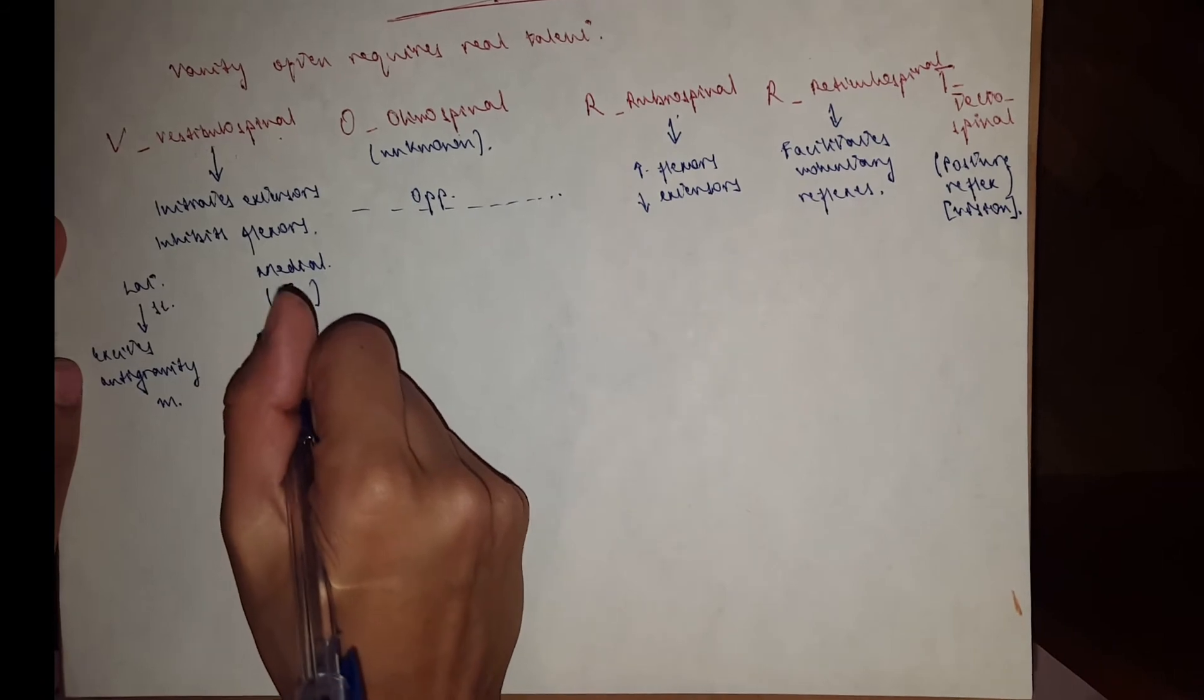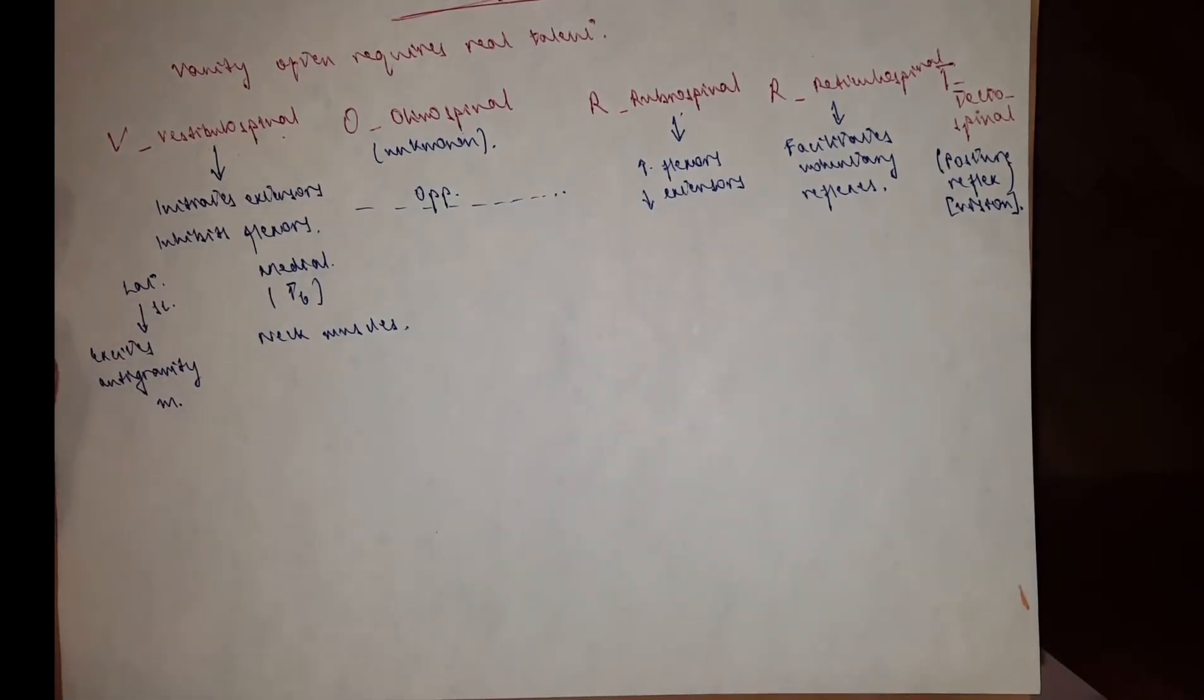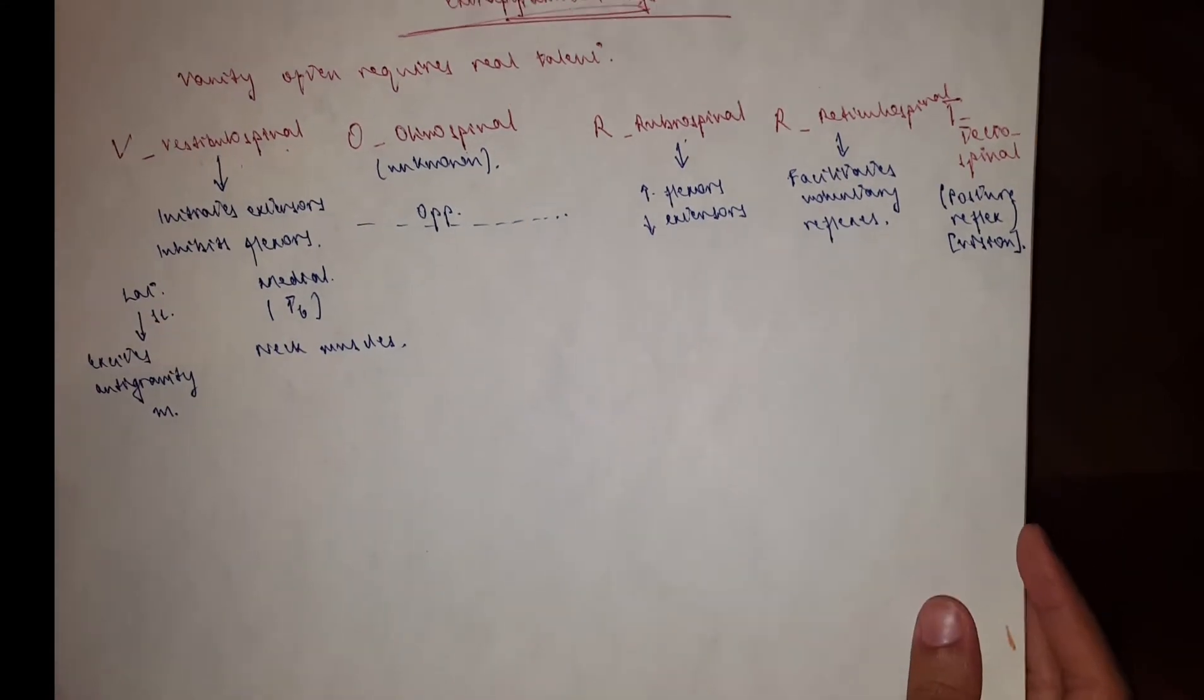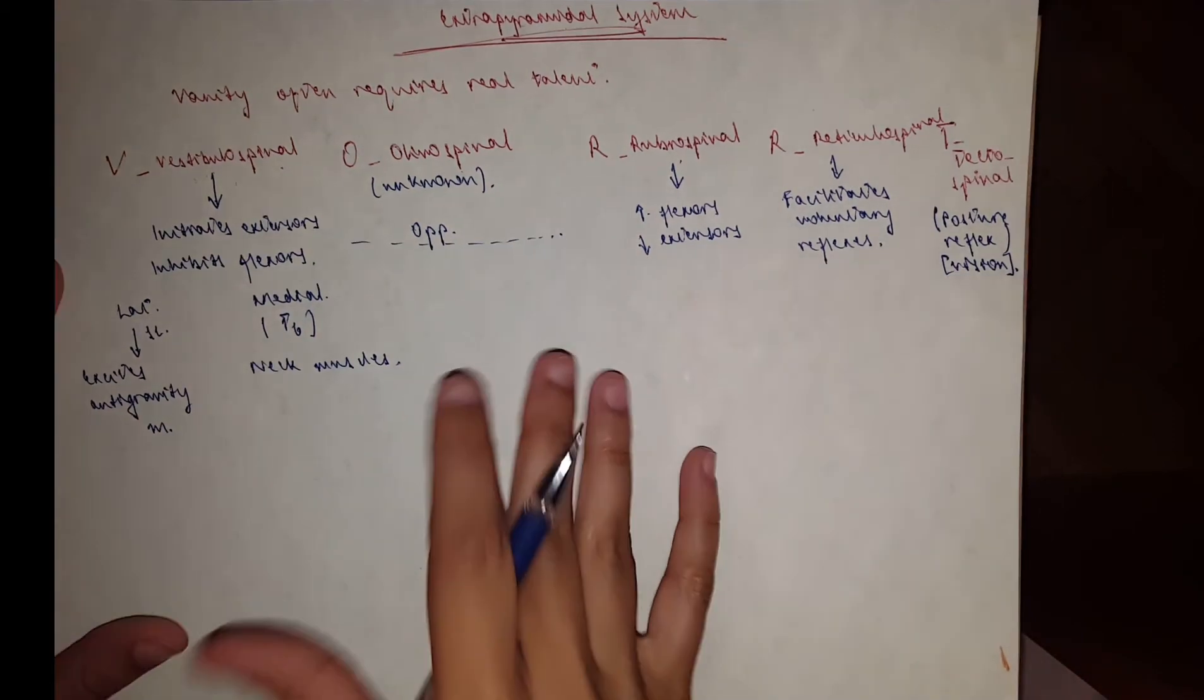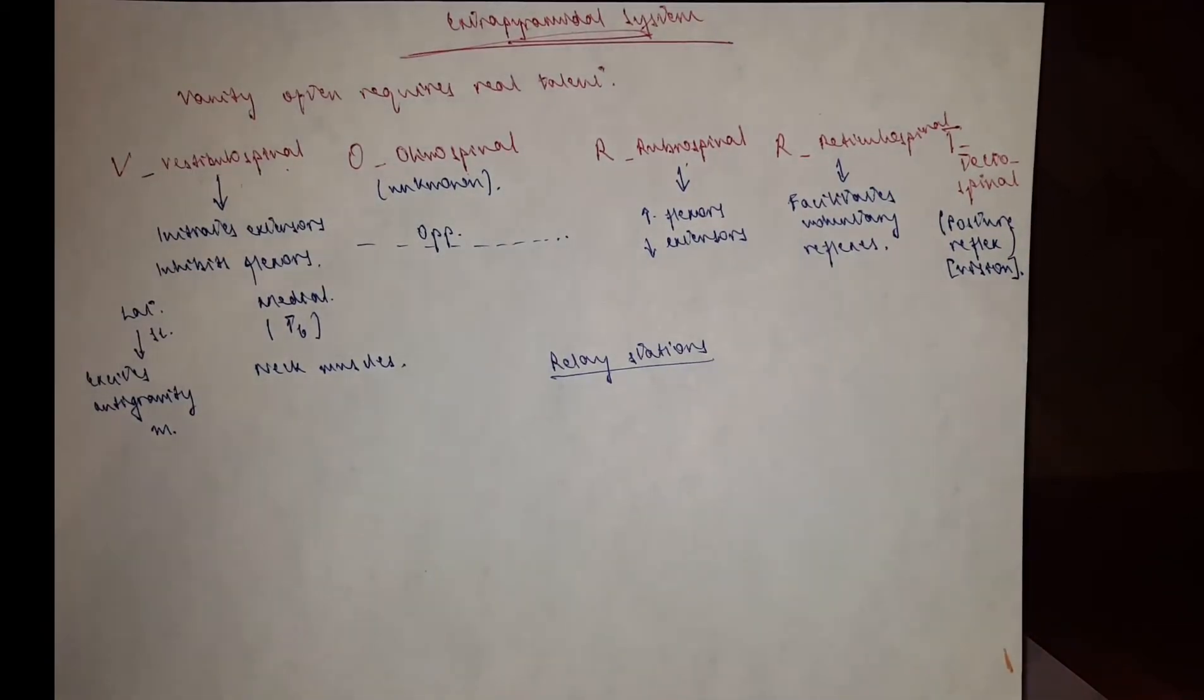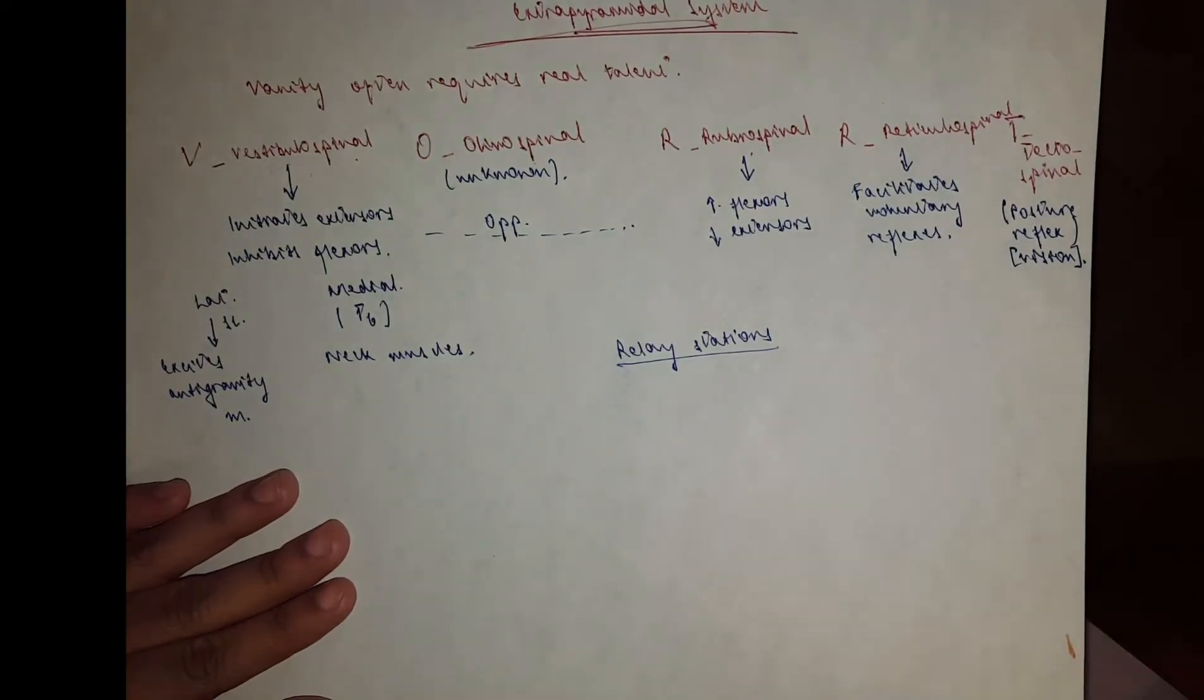The thing about the extrapyramidal system is that it's a multi-neuronal and multi-synaptic pathway, so it has several relay stations. The relay stations are in the brain, not in the spinal cord. They are multi-neuronal and multi-synaptic, and they have to terminate in the motor cortex. From the motor cortex, these tracts will take it to the different muscles: extensors, flexors, or voluntary reflexes.